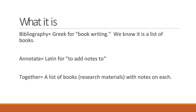So what are they? We borrow the term from a combination of Greek and Latin. Bibliography comes from Greek and translates to book writing — a list of books, or to modernize one more step, a list of materials that could include books, articles, films, etc. Annotate comes from Latin and translates to add notes to. Put them together and you have a list of research materials with notes on each.